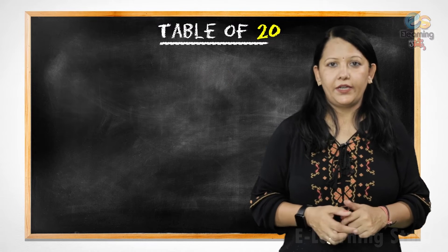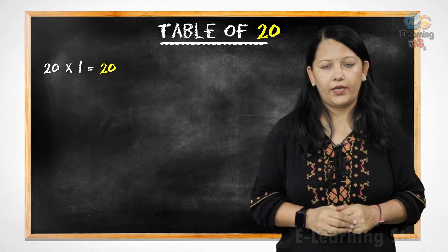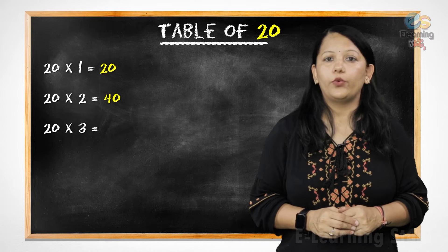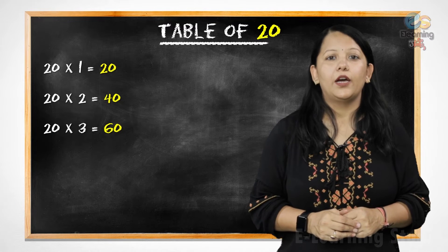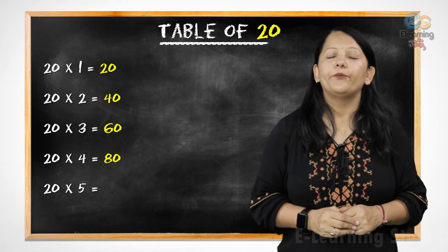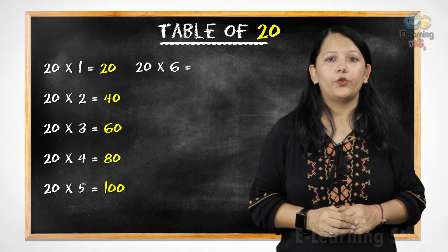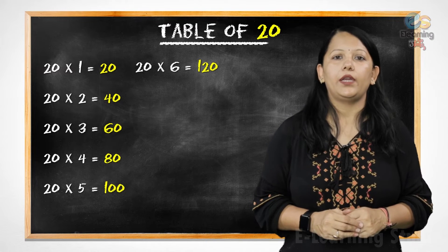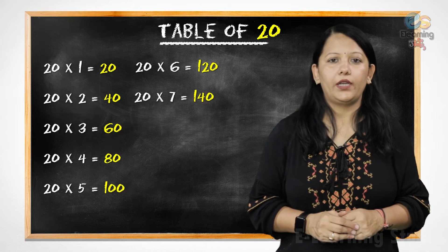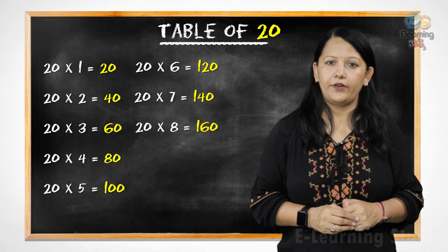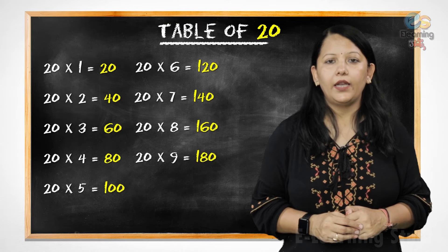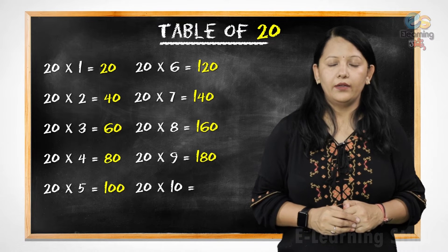Now let's revise it. 2 1's are 20, 2 2's are 40, 2 3's are 60, 2 4's are 80, 2 5's are 100, 2 6's are 120, 2 7's are 140, 2 8's are 160, 2 9's are 180, 20 10's are 200.